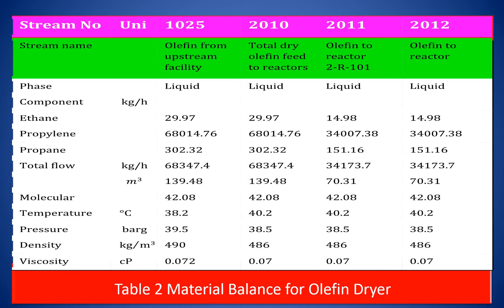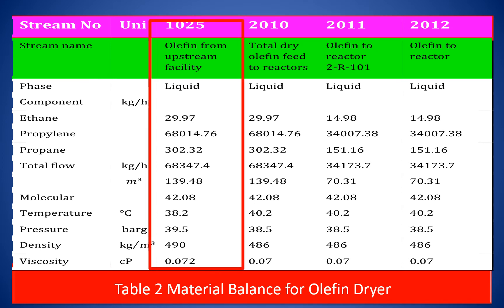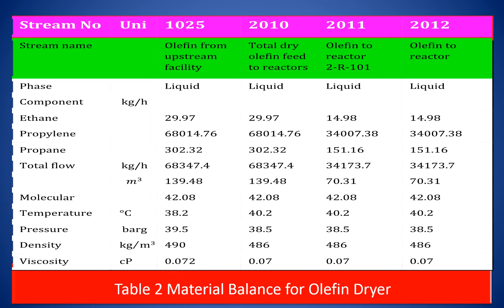For example, take stream number 1025. It is a liquid phase olefin with a total mass flow rate of 68,347 kg per hour consisting of C10, propylene and propane at pressure and temperature of 39.5 bar and 38.2 degree centigrade. Thus, the table provides material balance around the olefin dryer — all useful information a chemical engineer needs to know about the dryer unit.